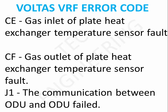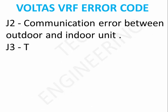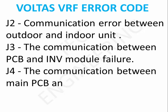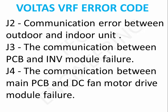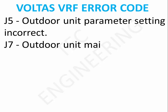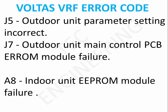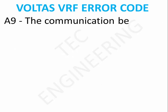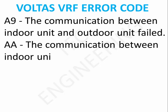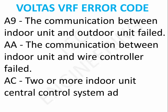C1 Communication Between ODU and ODU Failed. C2 Communication Error Between Outdoor and Indoor Unit. C3 Communication Between PCB and INV Module Failure. C4 Communication Between Main PCB and DC Fan Motor Drive Module Failure. C5 Outdoor Unit Parameter Setting Incorrect. C7 Outdoor Unit Main Control PCB EEPROM Module Failure. C8 Indoor Unit EEPROM Module Failure. C9 Communication Between Indoor Unit and Outdoor Unit Failed. CB Communication Between Indoor Unit and Wire Controller Failed.